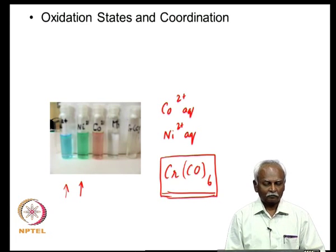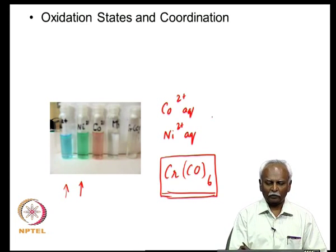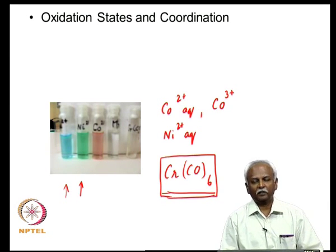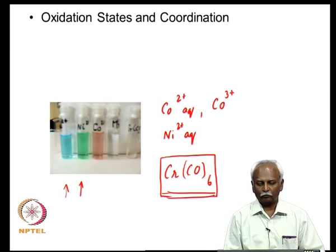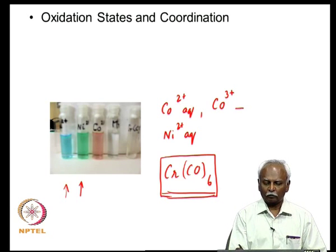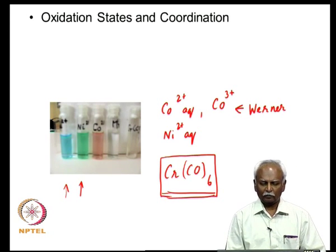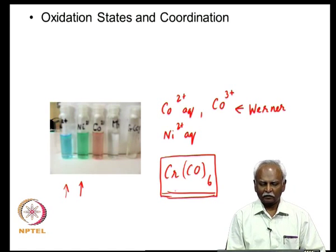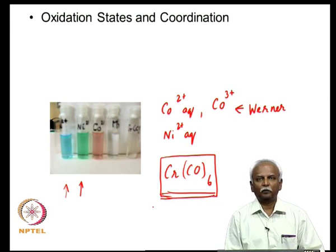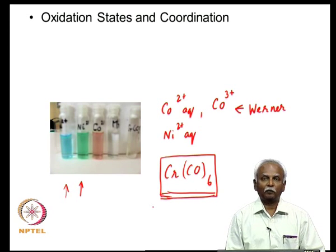Nickel tends to form only 2+ complexes, but cobalt can be 2+ or 3+, so variable oxidation state is characteristic of Werner's chemistry. This is typical of Werner's chemistry, whereas organometallic chemistry tends to stick with simple neutral complexes when it comes to homoleptic carbonyl complexes.